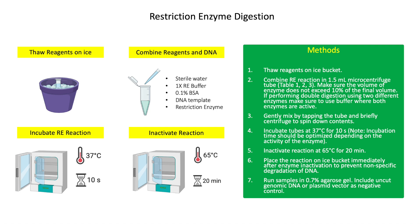Determine the restriction enzymes to be used for RE digestion. RE sites present in the multiple cloning site (MCS) are often used since they will not cut elsewhere in the plasmid vector. Make sure that the RE used for cutting the DNA and plasmid vector has compatible cleavage sites in order to insert the DNA into the plasmid using complementary base pairing with the aid of ligase.